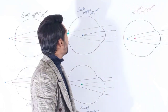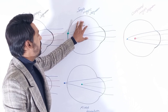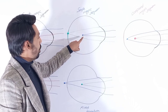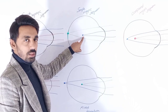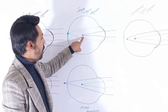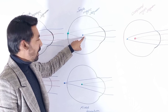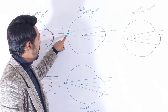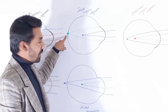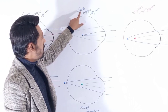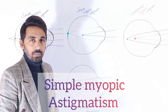And if we talk about simple myopic astigmatism, there are two different focal points. The first focal point is in front of the retina and the second one is on the sensitive layer of the retina, and this is called simple myopic astigmatism.